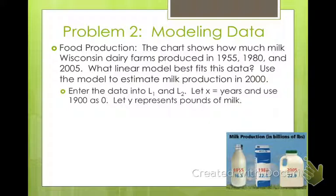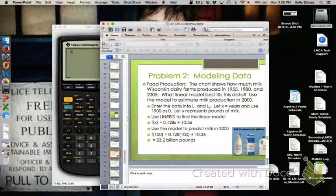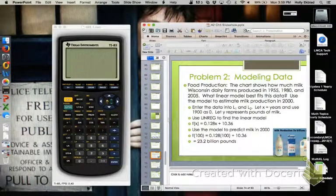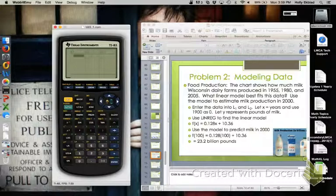Go to Stat and we're going to use x to represent our years. But we're going to start with 1900 being 0, just so our numbers are smaller and easier to work with. We're going to let y represent pounds of milk. So go to Stat and hit Enter on Edit.